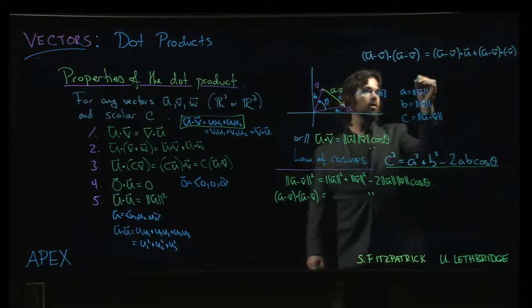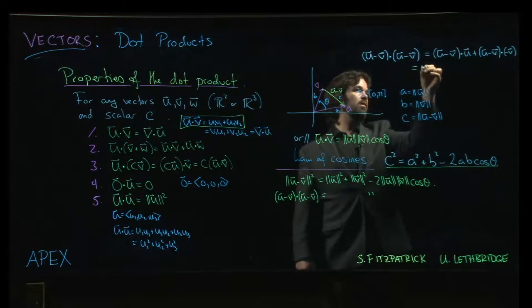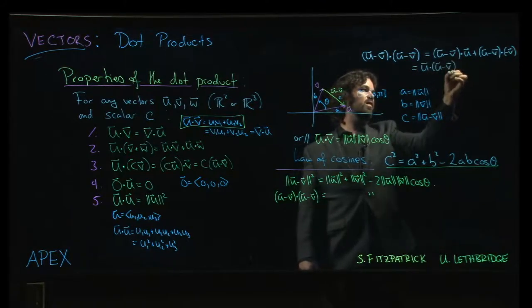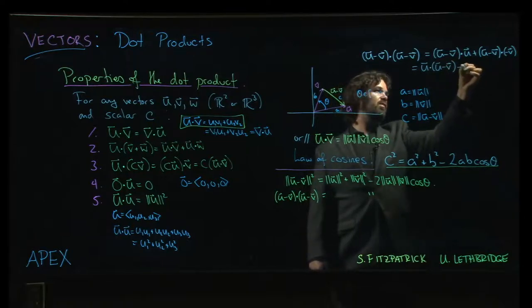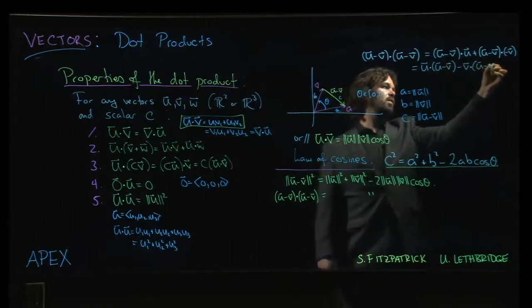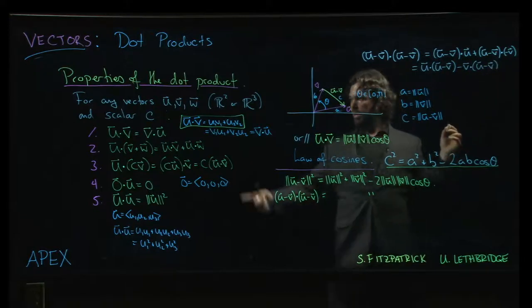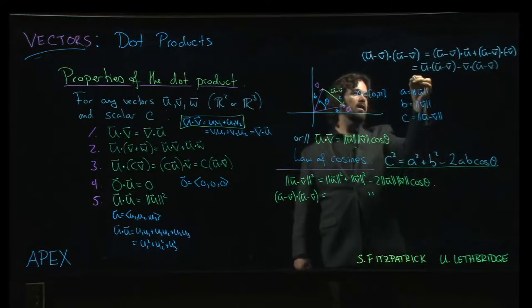Okay, then I can change the order up, I can write that as u dotted with u minus v, and then minus v dotted with u minus v. And again, I'm using the first property there.